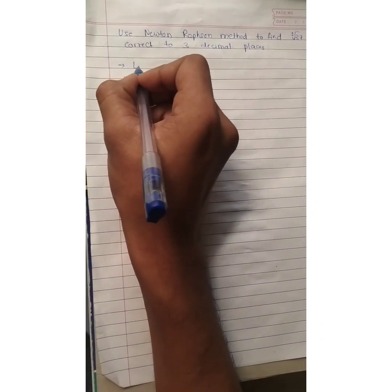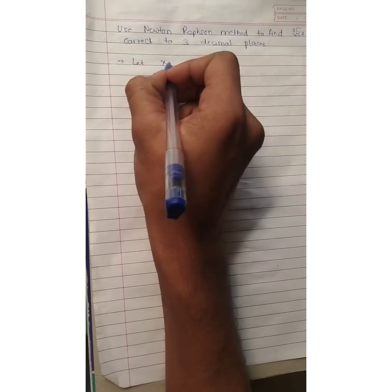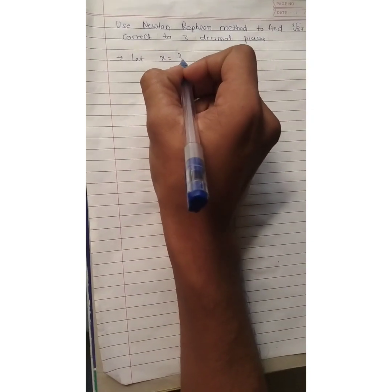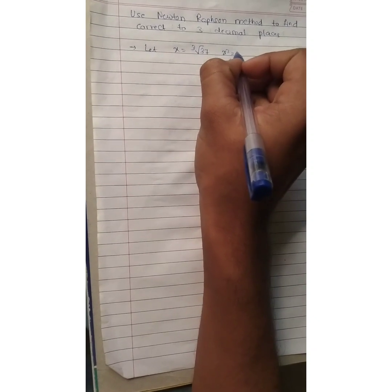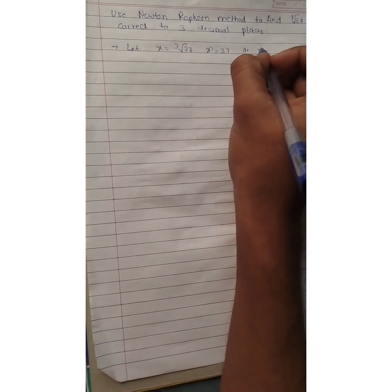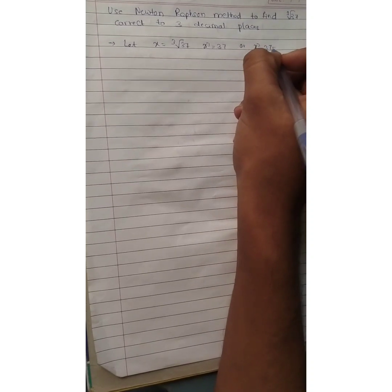Question: Use Newton-Raphson method to find cube root of 37 correct to 3 decimal places. Solution is, let given x is equal to cube root of 37, that is x cube equal to 37, or x cube minus 37 equal to 0.